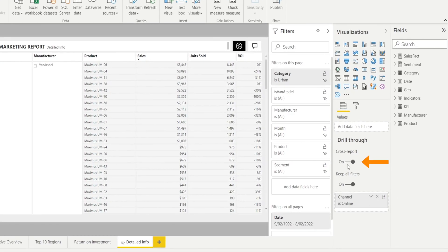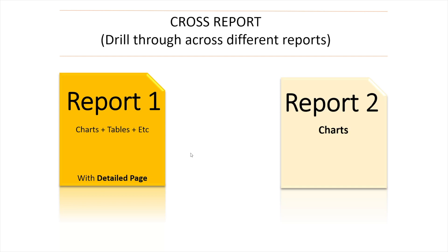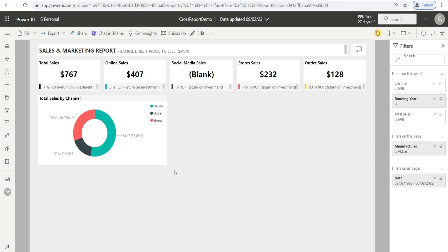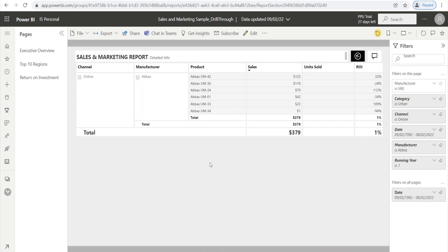Let's explore cross report. There is an option to turn it off or on. When cross report is turned on, Power BI will enable us to drill through across different reports. Earlier we operated in one PBIX report, clicking charts and drilling through to a detailed page. With cross report, we can click a chart in one report and it will open a detailed page that sits in a completely different PBIX file. Let me show you — this simple Power BI report has one page with a donut chart. I can right-click to drill through and it will bring me to the detailed info in the Sales and Marketing Sample.